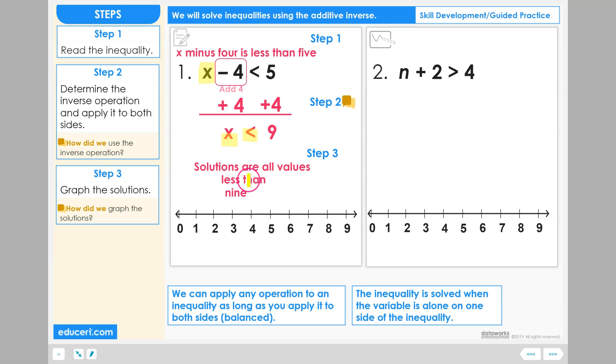Solutions are all values less than nine. So to graph this, we're going to start at nine. We're going to use an open circle because nine is not included as a solution. Nine is not less than nine. And then we are going to shade in the direction of all the values less than nine. So we will shade in this direction. And this is the graph of all the solutions.